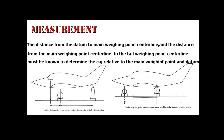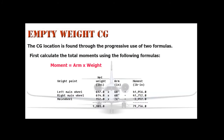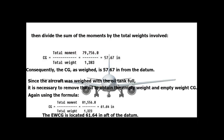Measurement: The distance from the datum to the main weighing point centerline, and the distance from the main weighing point centerline to the tail weighing point centerline, must be known to determine the CG relative to the main weighing point and datum. Empty Weight: The empty weight of the aircraft is determined by adding the net weight on each weighing point — the net weight is the actual scale reading less the tare weight. The CG location is found using two formulas: first, Moment = R × Weight; then CG = Total Moment ÷ Total Weight.